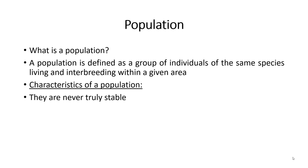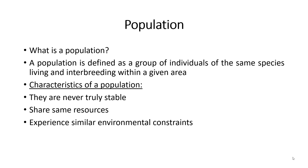Population stress may cause sudden and unexpected shifts in the numbers. They share the same resources. The species experience similar environmental constraints — for example, shortage of food, space, abundance of predators, or other similar constraints. They are interdependent: the individuals within the population depend on other related individuals for their survival.